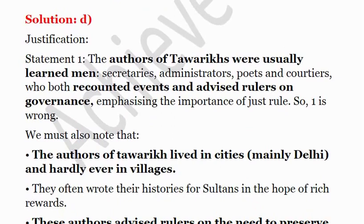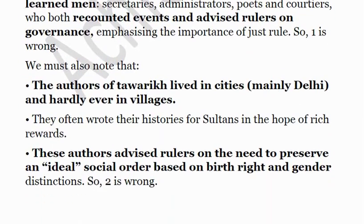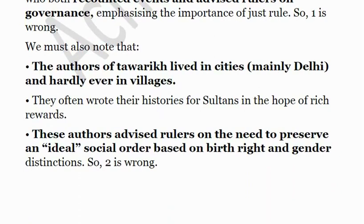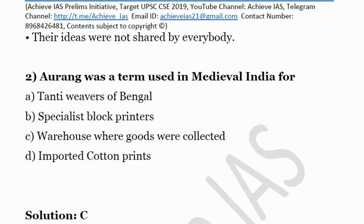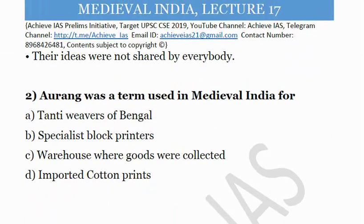The authors of Twariks were learned men who recounted events and advised rulers on governance, emphasizing just rule. Regarding the second statement, Twariks did argue for maintaining social order, but in terms of gender and traditional modes — not for social equality. They advised rulers on preserving an ideal social order based on birthright and gender. So both statements are wrong. The answer is D.